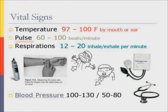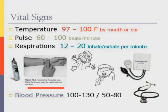Heart rate. You can measure a pulse anywhere there is an artery. Most people use the radial artery in the wrist. To feel the pulse in the wrist, place your index and middle finger over the underside of your opposite wrist, below the base of the thumb. Press firmly with flat fingers until you feel pounding.